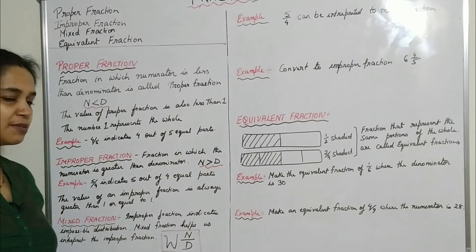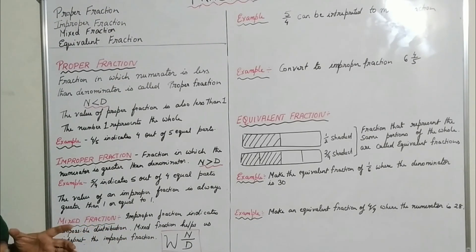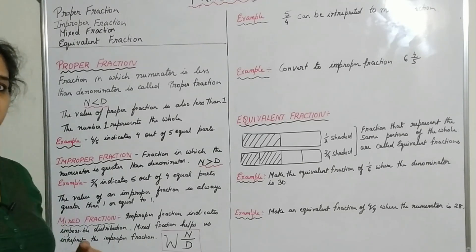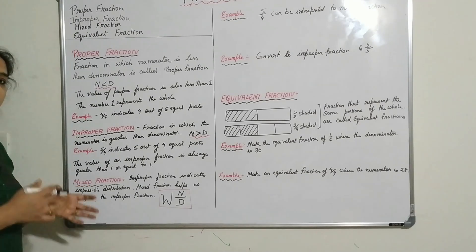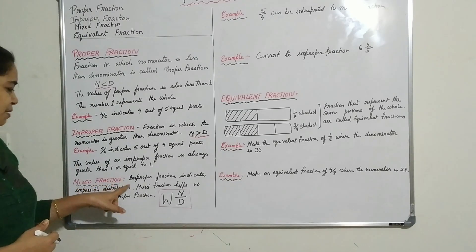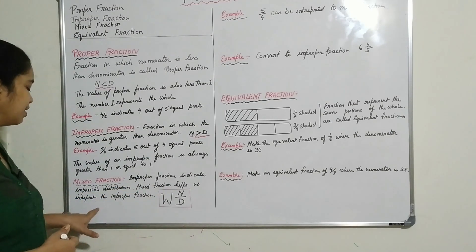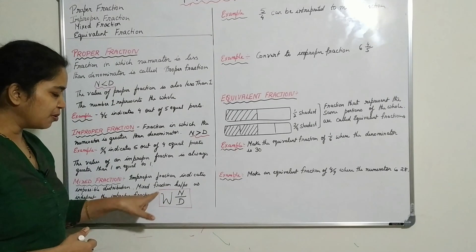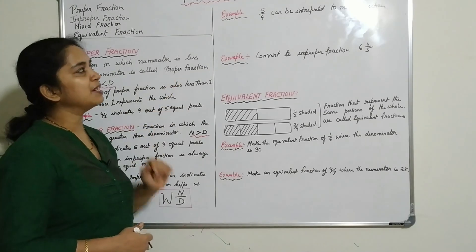Now, what is a mixed fraction? An improper fraction indicates an impossible distribution. When we interpret an improper fraction it becomes a mixed fraction — that is, a whole number combined with a proper fraction. So a mixed fraction helps us interpret the improper fraction as a whole number and a proper fraction.